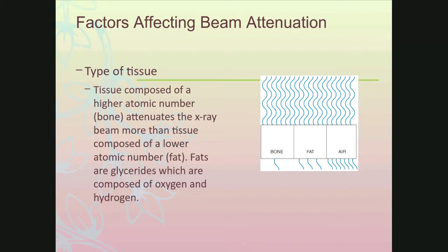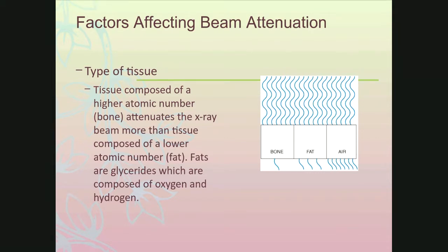Not only tissue thickness, but the type of tissue also affects beam attenuation. When tissue is made up of a higher atomic number, like bone which is made of calcium at atomic number 20, that will attenuate the x-ray beam more than tissue with a lower atomic number like fat. Fat is actually considered a glyceride, made up of oxygen (atomic number 8) and hydrogen (atomic number 1) — very low atomic number elements compared to bone at 20, barium at 56, or iodine at 53. So what you're passing through, and whether there's any contrast media in that tissue, affects attenuation as well.